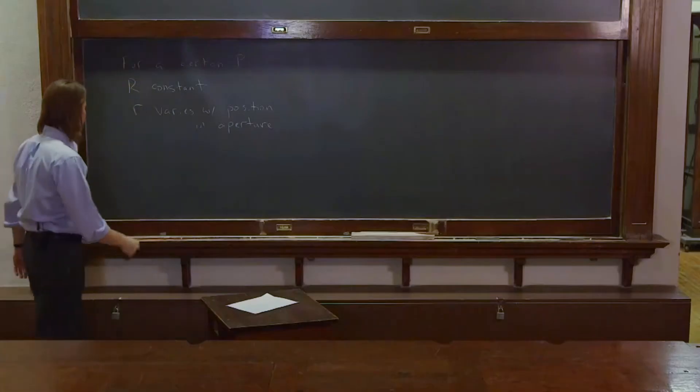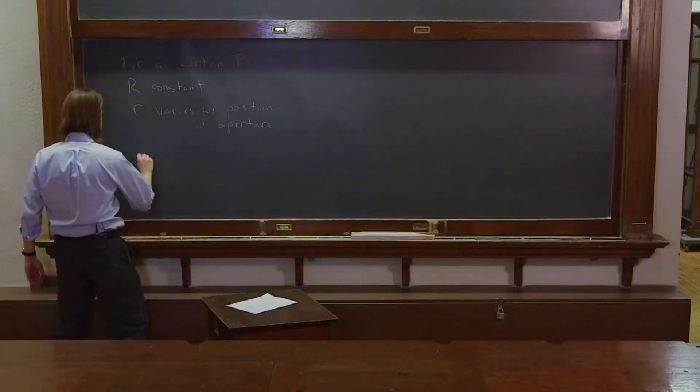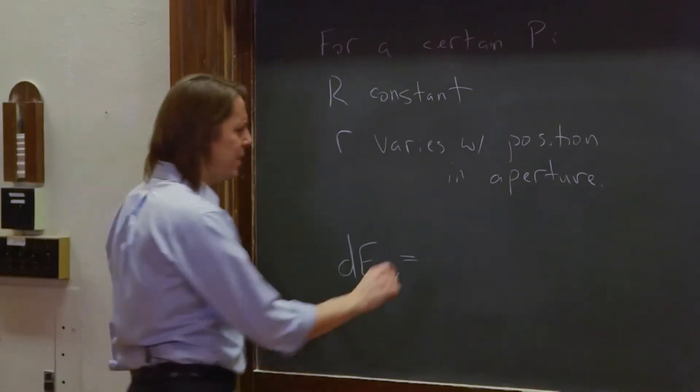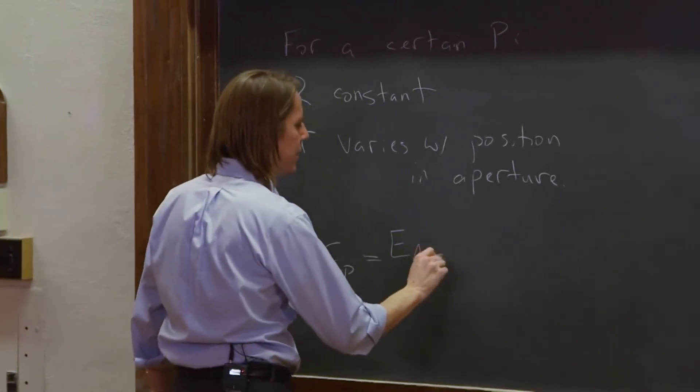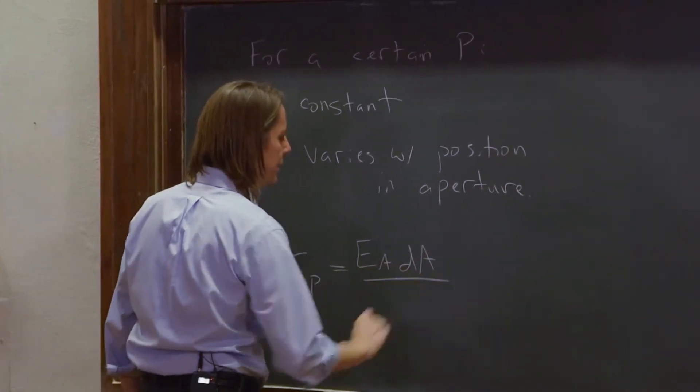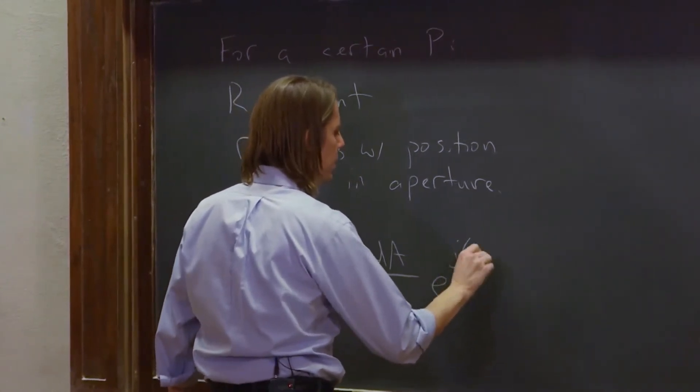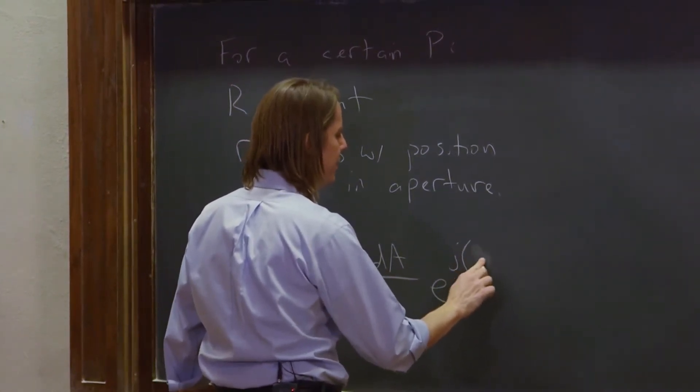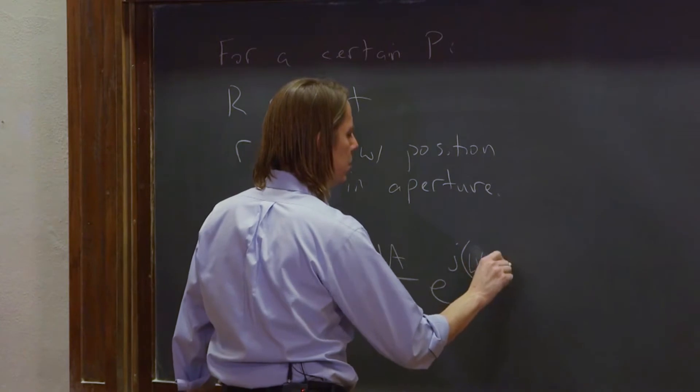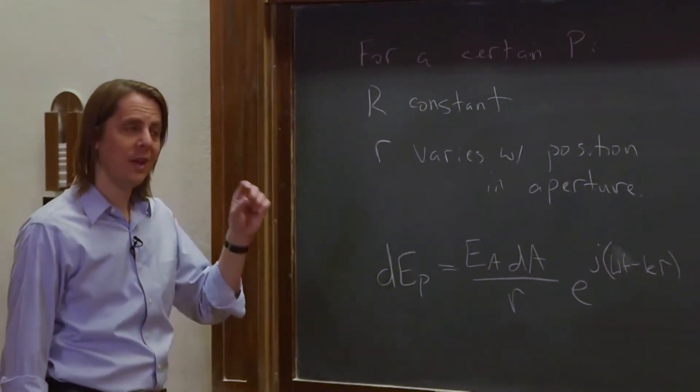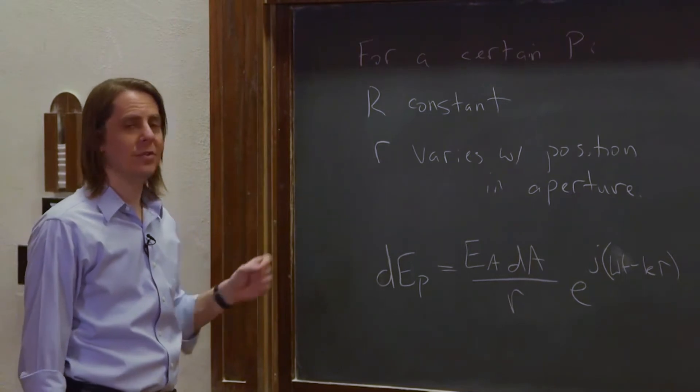So we can see what that's going to do to our DEP. What was it? It was EA, that's a constant, DA, that's for our integral, and then it was little r, and then E to the J, omega T minus kr. Little r - they're both little r, because the Huygens wavelet is at a distance little r.